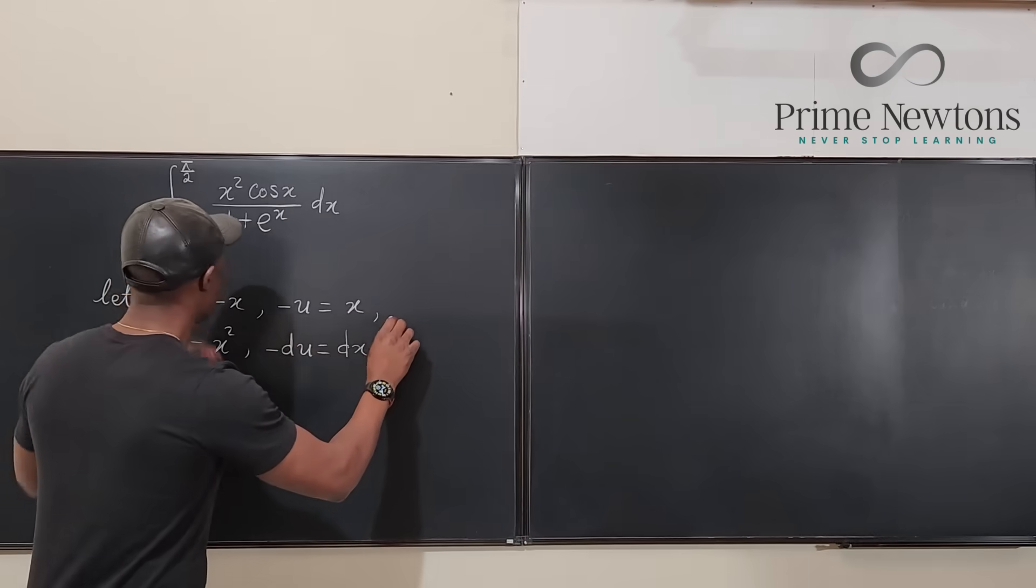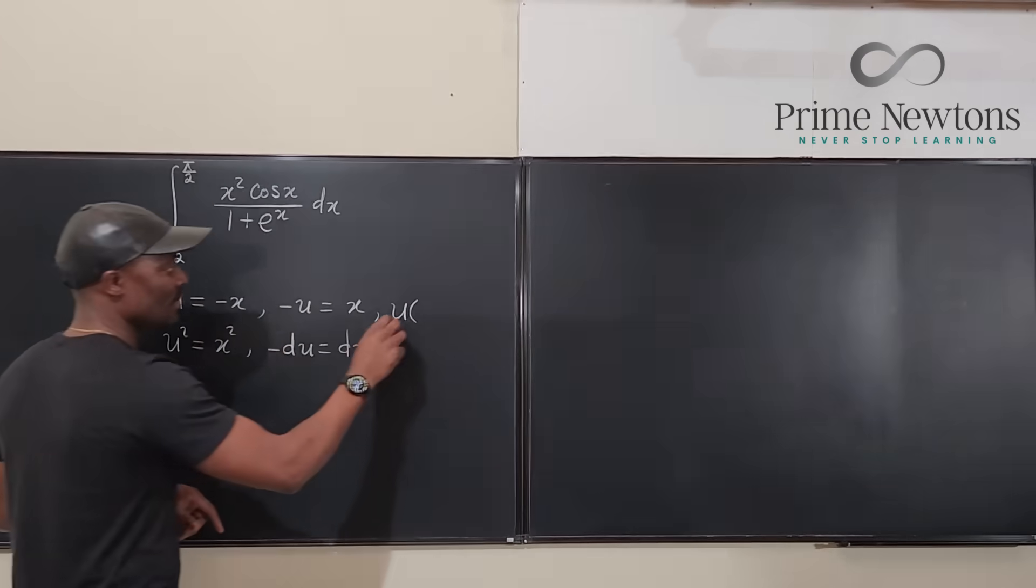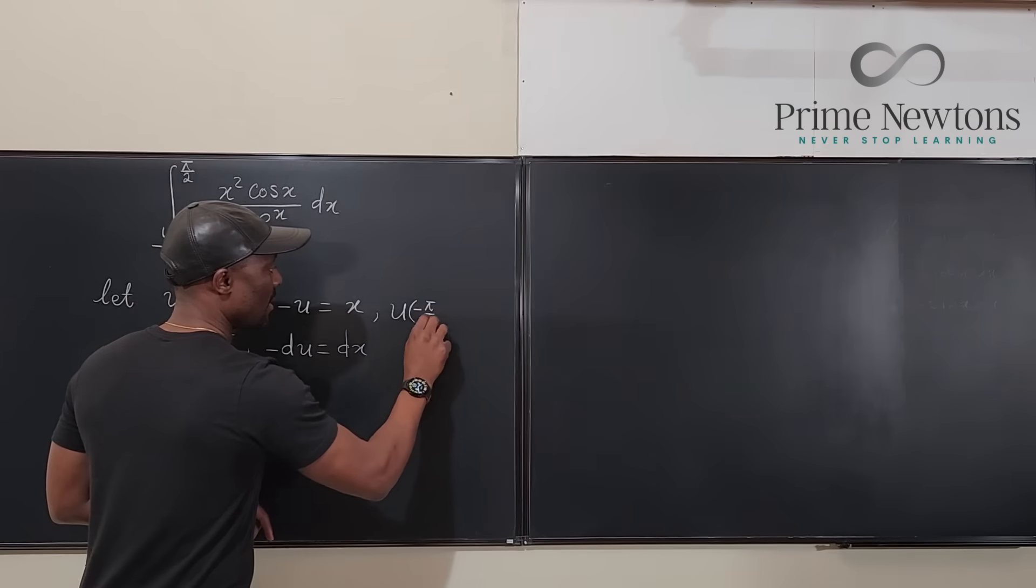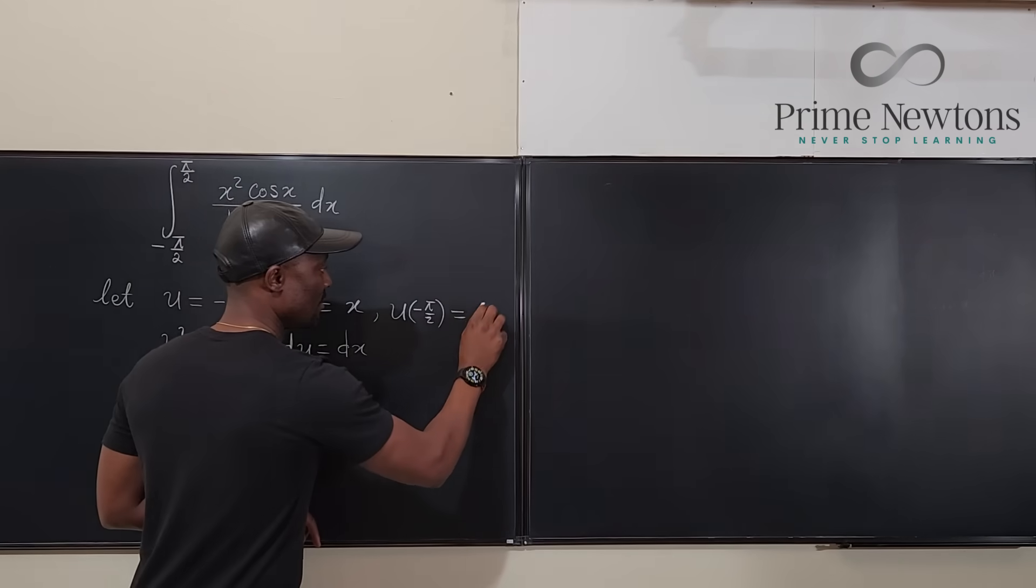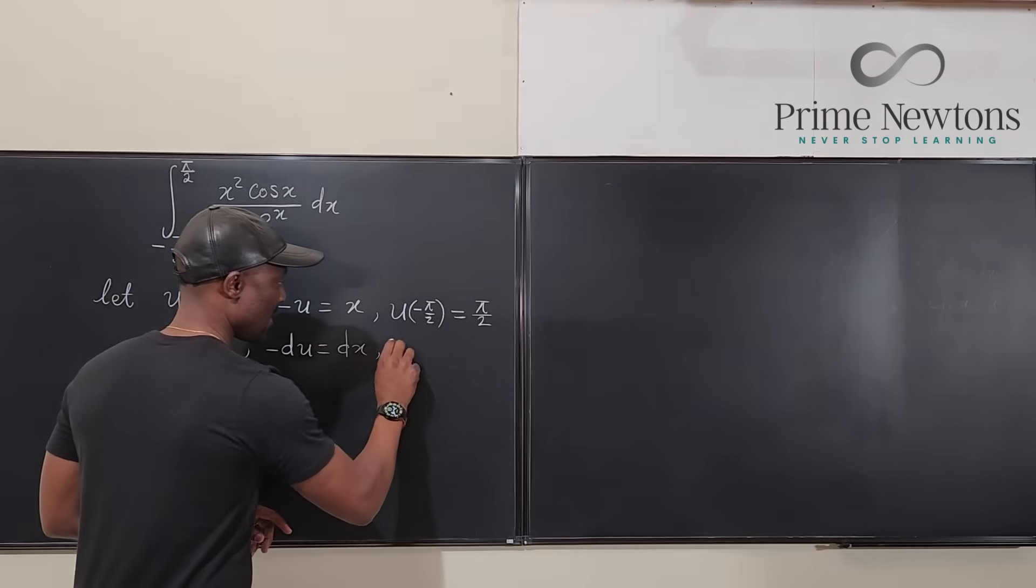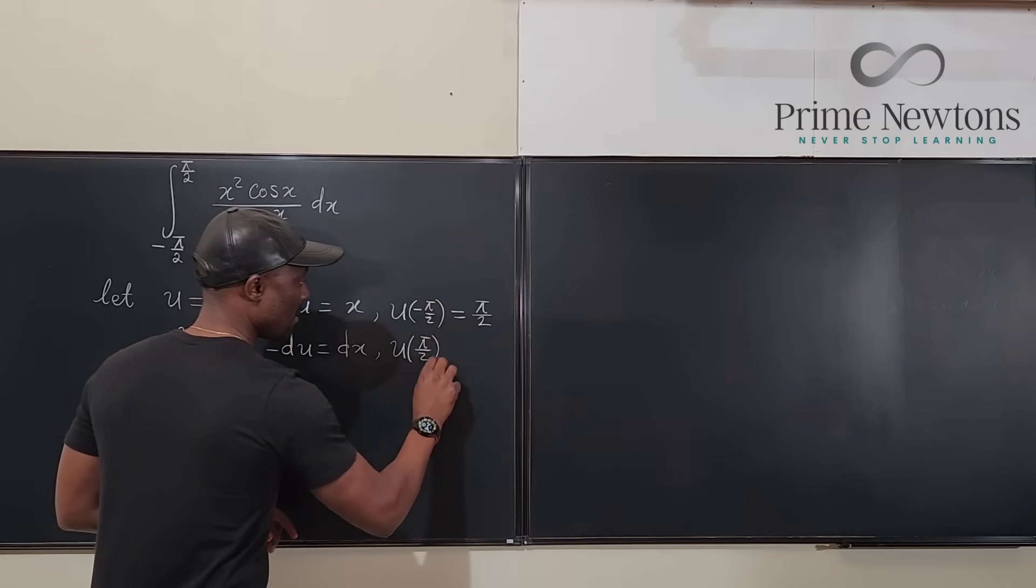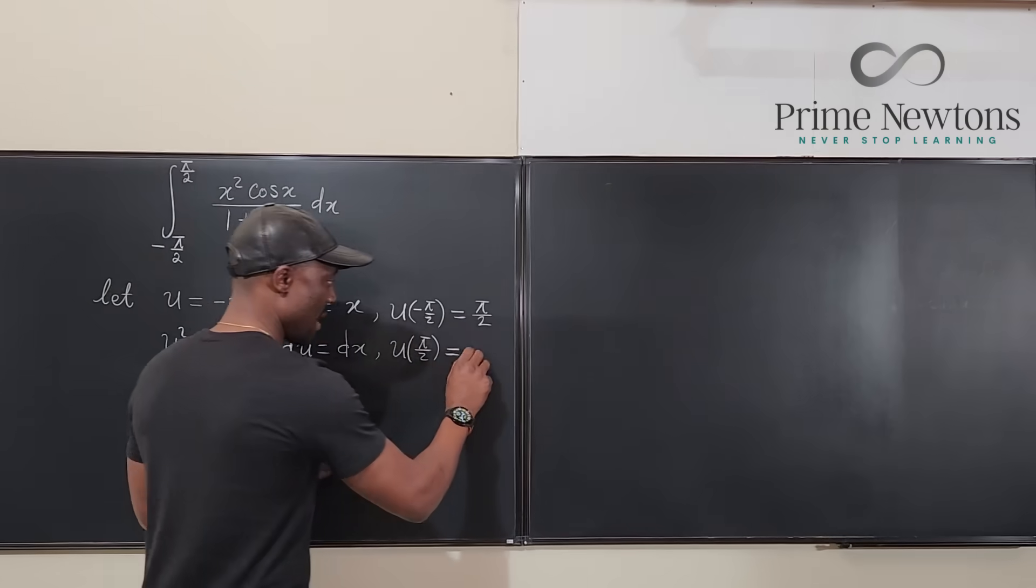Now we also have these boundaries. We know that when you evaluate u by plugging in negative π/2 for x you're going to end up with just π/2. And you plug in π/2 you're going to end up with negative π/2.